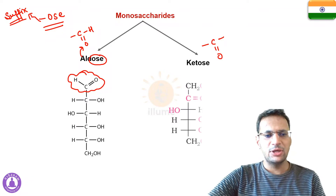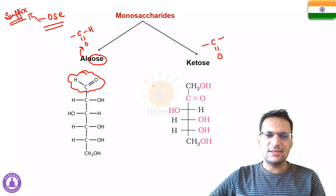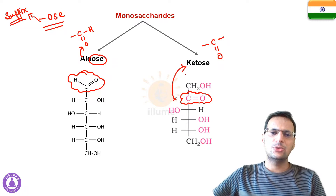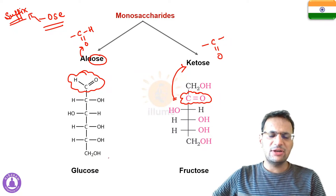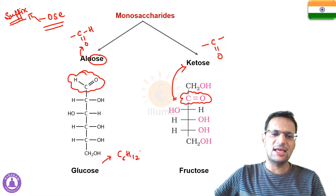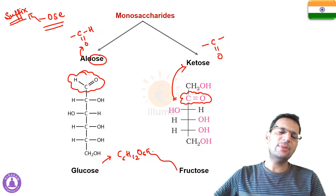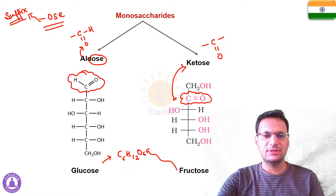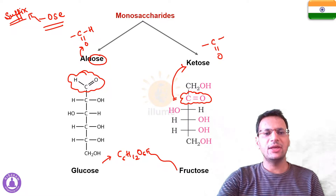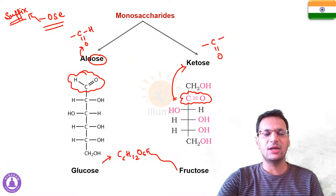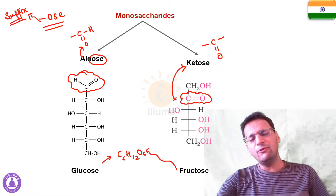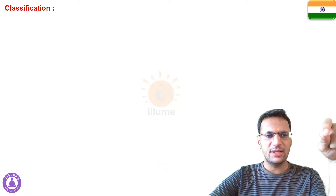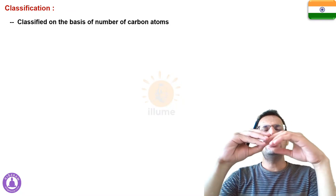Glucose has an aldehyde group, so it is an aldose sugar. Fructose has a carbonyl (ketonic) group, making it a ketose sugar. Both glucose and fructose have the same chemical formula — C₆H₁₂O₆ — but they have different functional groups, giving them different chemical and physical properties. They are isomers of each other. Question for you: what type of isomerism is this? Let us know in the comments.